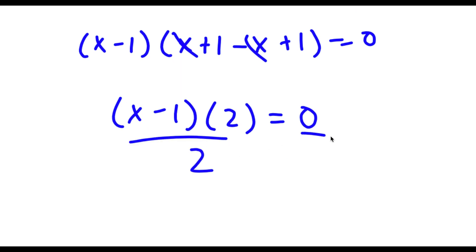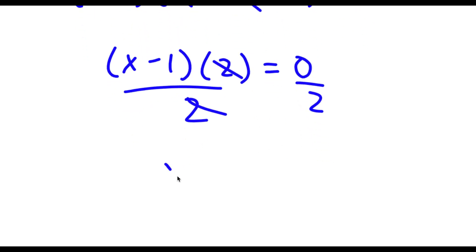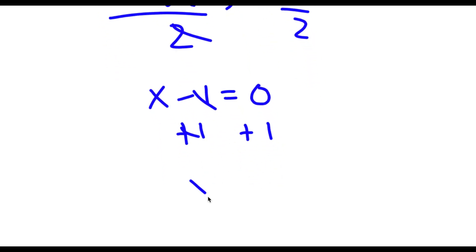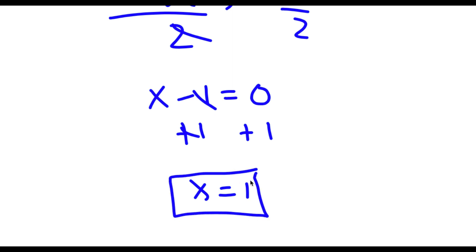Dividing both sides by 2, those cancel out, leaving x minus 1 equals 0. Adding 1 to both sides, I get x equals 1. So this is my answer.